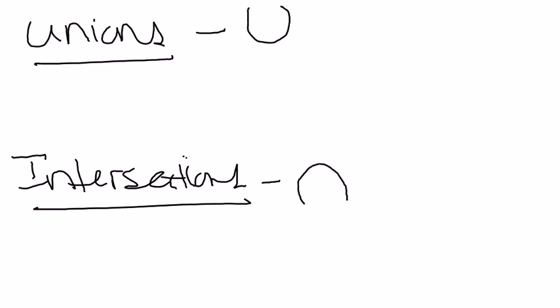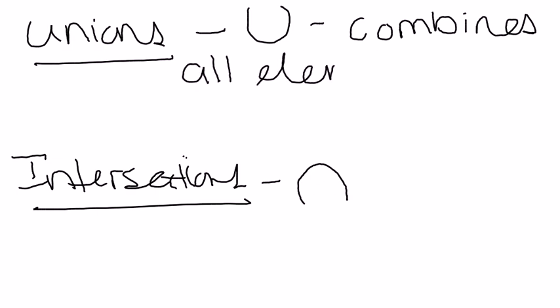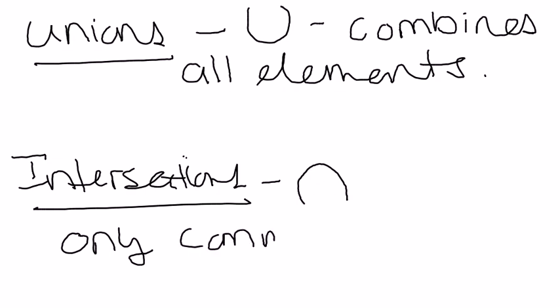Now the difference in definition is a union actually combines all elements between two or more sets. And an intersection is only referring to common elements between two or more sets.